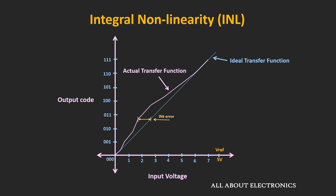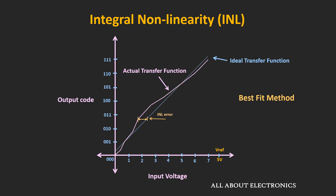The INL indicates how the actual curve deviates from the ideal straight line, and there are two methods to draw this reference line. The first is the endpoint method, where the straight line passes through the endpoints of the actual transfer curve — usually drawn after removing the gain and offset error, so the line passes through the origin. This method gives the worst possible INL error and is preferred for precision measurements. The second is the best-fit method, where the best-fitted line closely representing the actual curve is drawn, and the INL error is measured relative to that line. The INL measured with the best-fit method is always less than with the endpoint method. While selecting an ADC, one should carefully examine all these parameters in the datasheet.